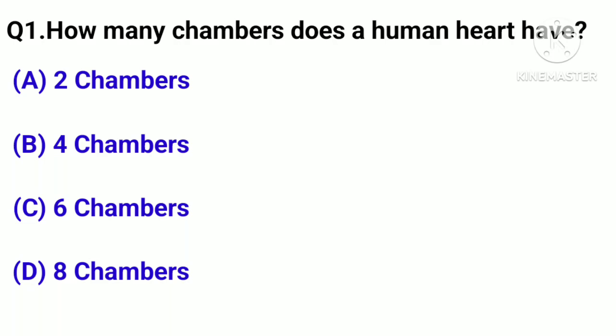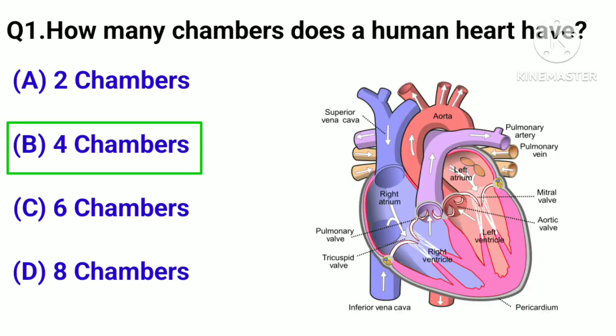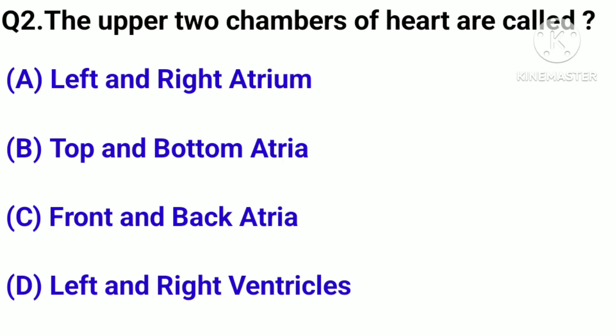Question number 1. How many chambers does a human heart have? Option A: 2 chambers. Option B: 4 chambers. Option C: 6 chambers. Option D: 8 chambers. Correct answer: Option B, 4 chambers.